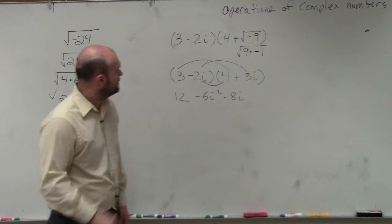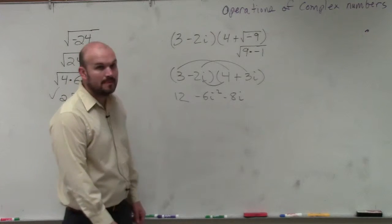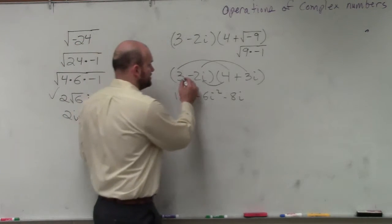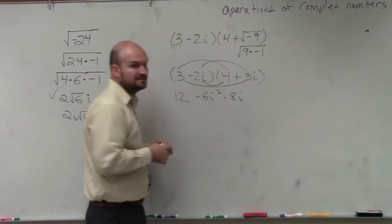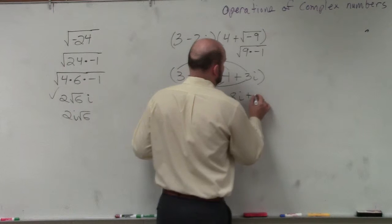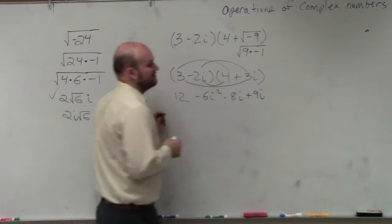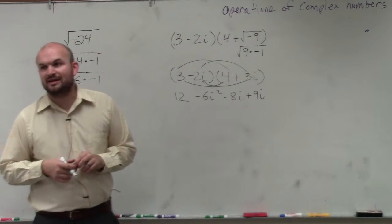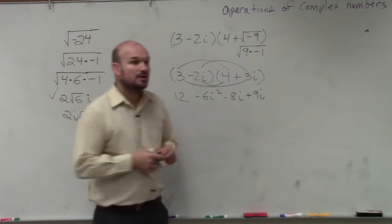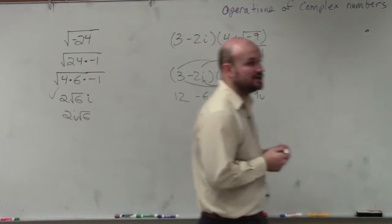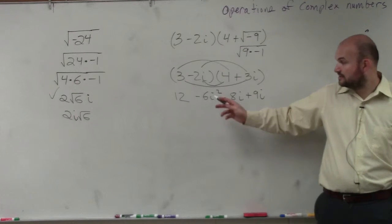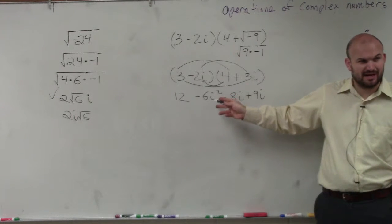So I'm just doing FOIL. It doesn't really matter what order you do it — I'm just multiplying every single term times every single term. 3 times 3i is going to be 9i. Anybody have any questions on any of my products? And then you just combine the terms. You're going to combine like terms, but before you do that, we want to simplify this. i squared represents what again, Brian?